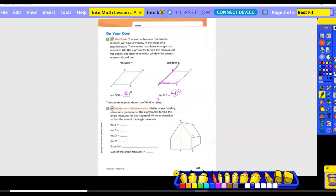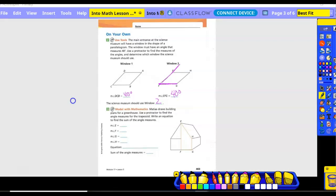Number three. Metanus draws building plans for a greenhouse. Use a protractor to find the angle measures of the trapezoid. Write an equation to find the sum of the angles of the measures. So after using your protractor, we found measure of angle E to be 70 degrees, F to be 90 degrees, G to be 90 degrees, H to be 145. And then we did 70 plus 90 plus 90 plus 145, and we got that to equal 395 degrees.